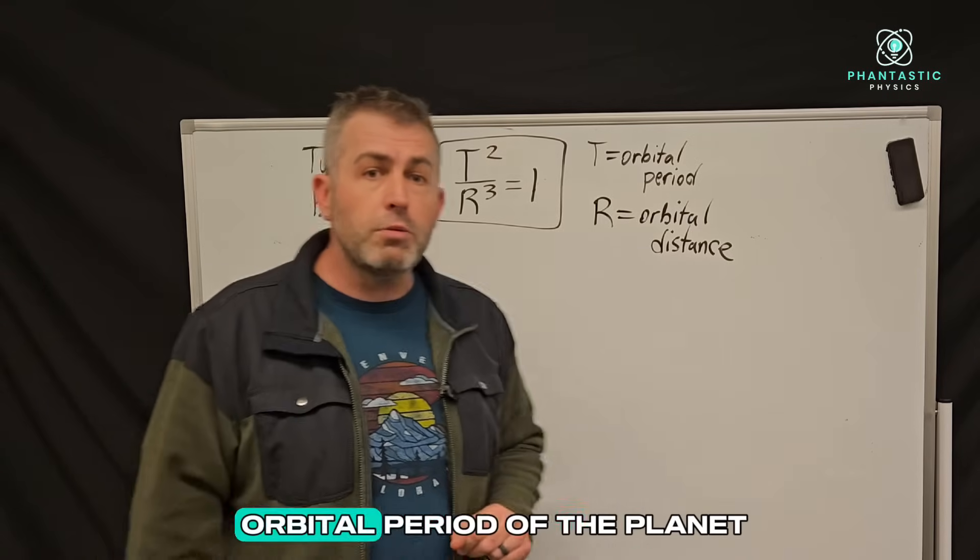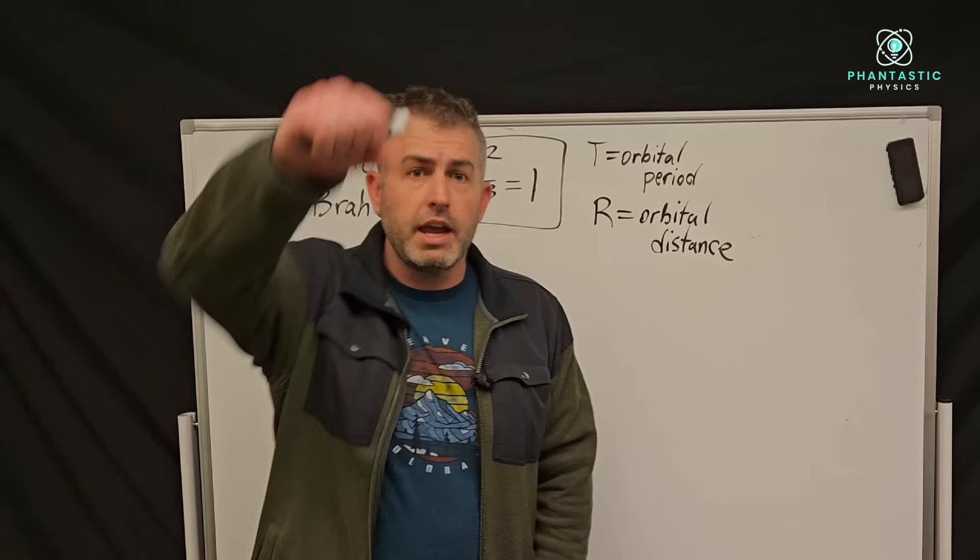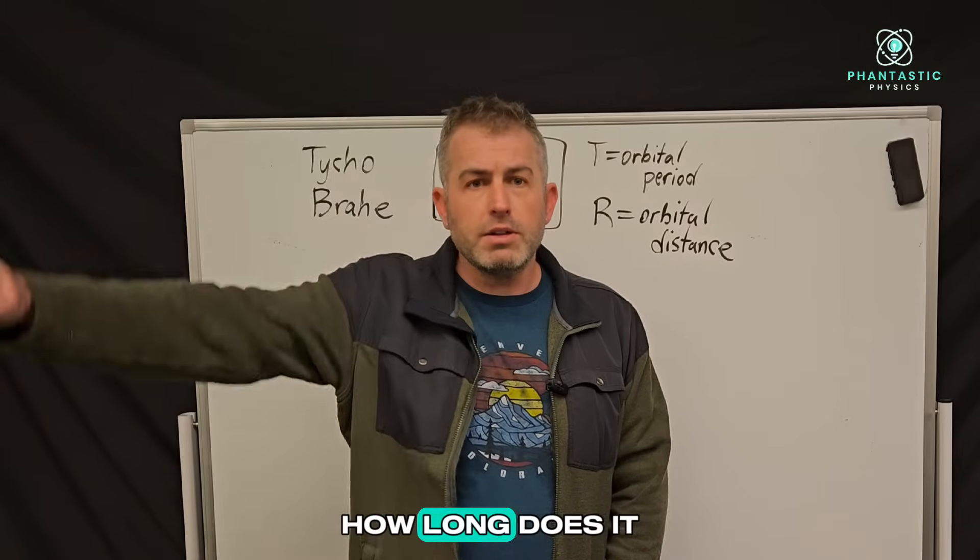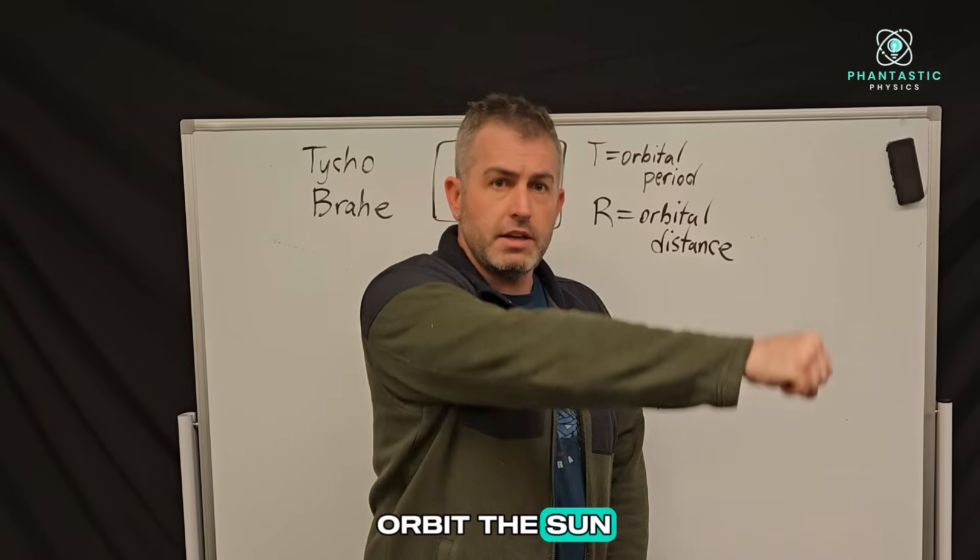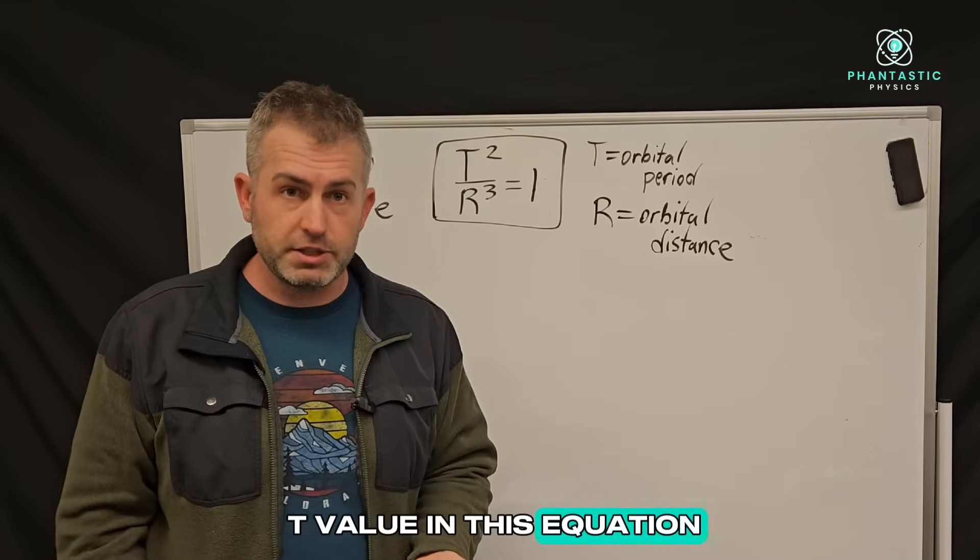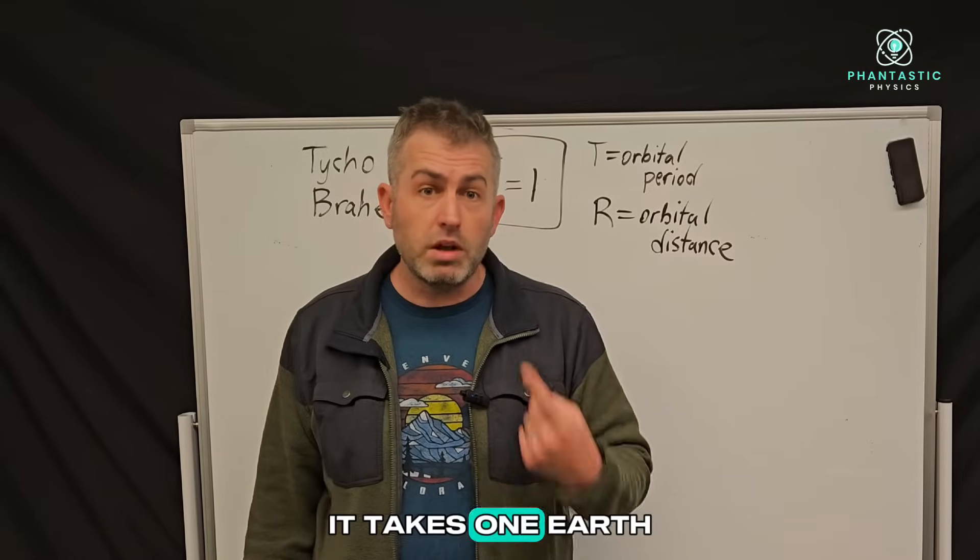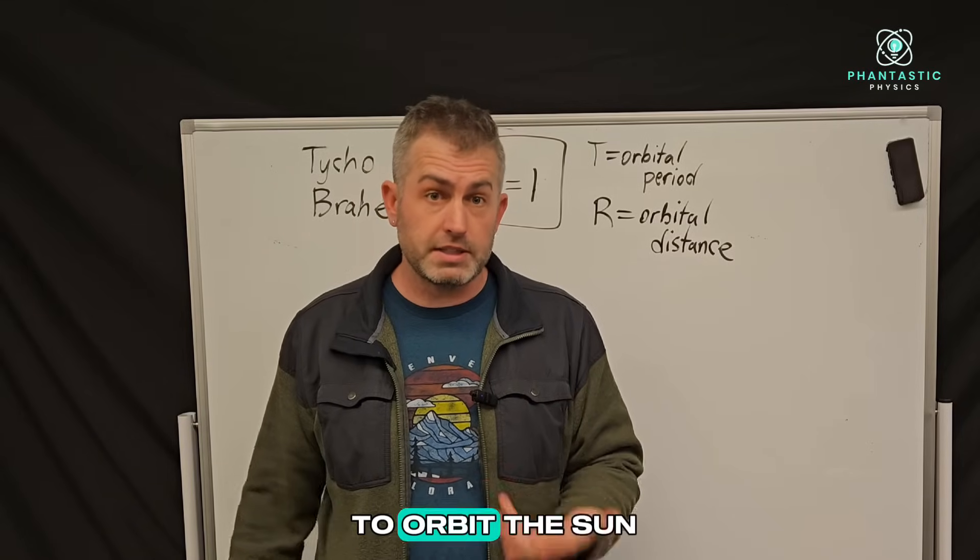T stands for the orbital period of the planet. If we're looking at planet Earth and wondering how long does it take the Earth to orbit the sun, how many years, that would be our T value in this equation. So what is T for planet Earth? It's one. It takes one earth year for the Earth to orbit the sun.